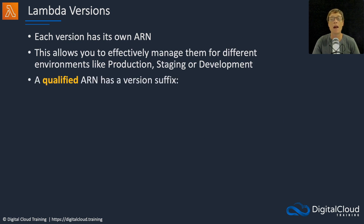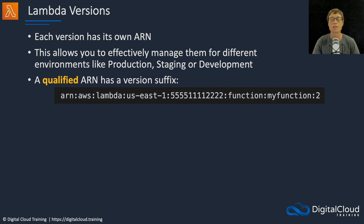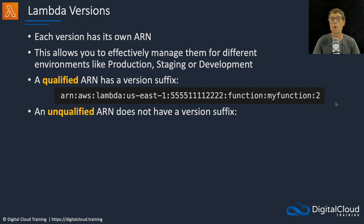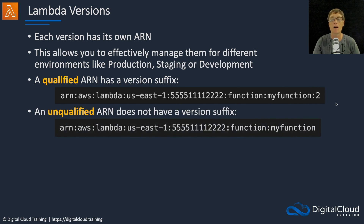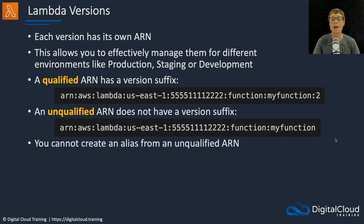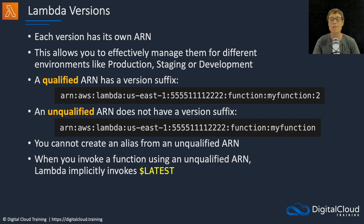There are qualified and unqualified ARNs. A qualified ARN has a version suffix — in this example, the ARN for the Lambda function ends with my-function:2. An unqualified ARN does not have a version suffix, it just says 'my-function' on the end. You cannot create an alias from an unqualified ARN. When you invoke a function using an unqualified ARN, Lambda will implicitly invoke $LATEST rather than a specific version.